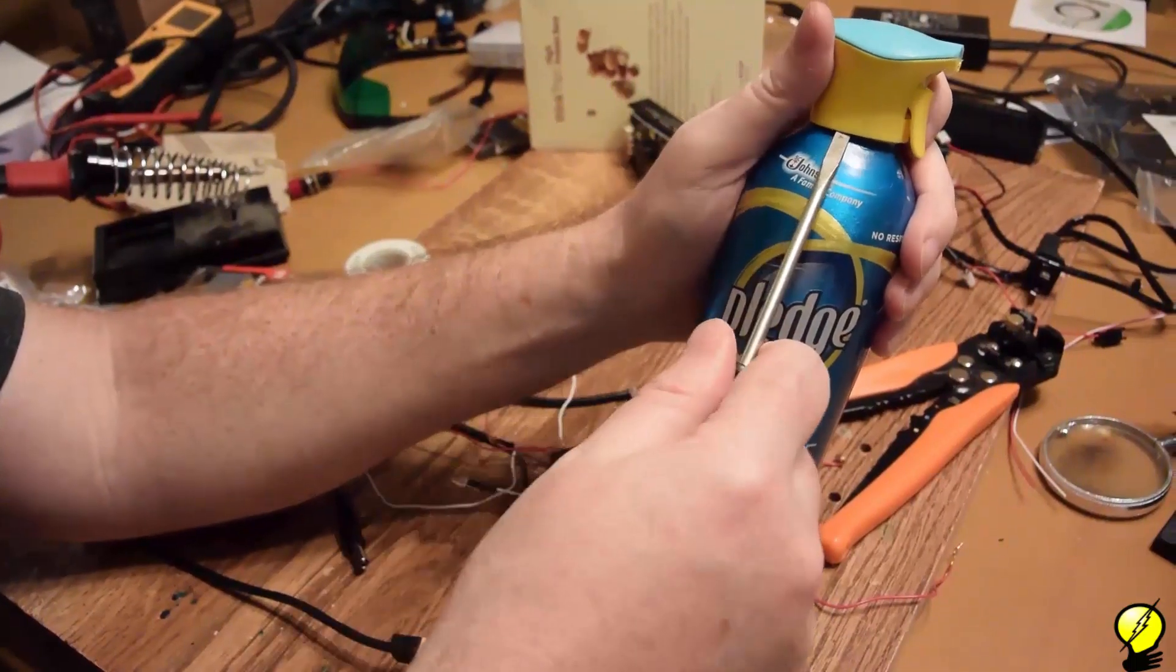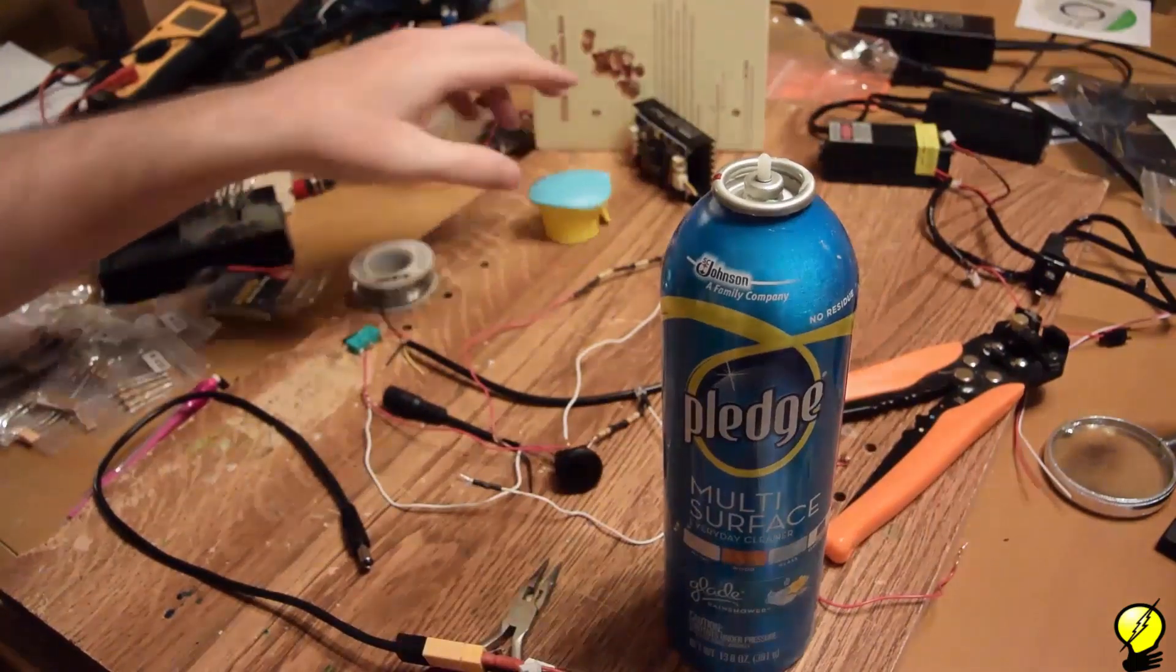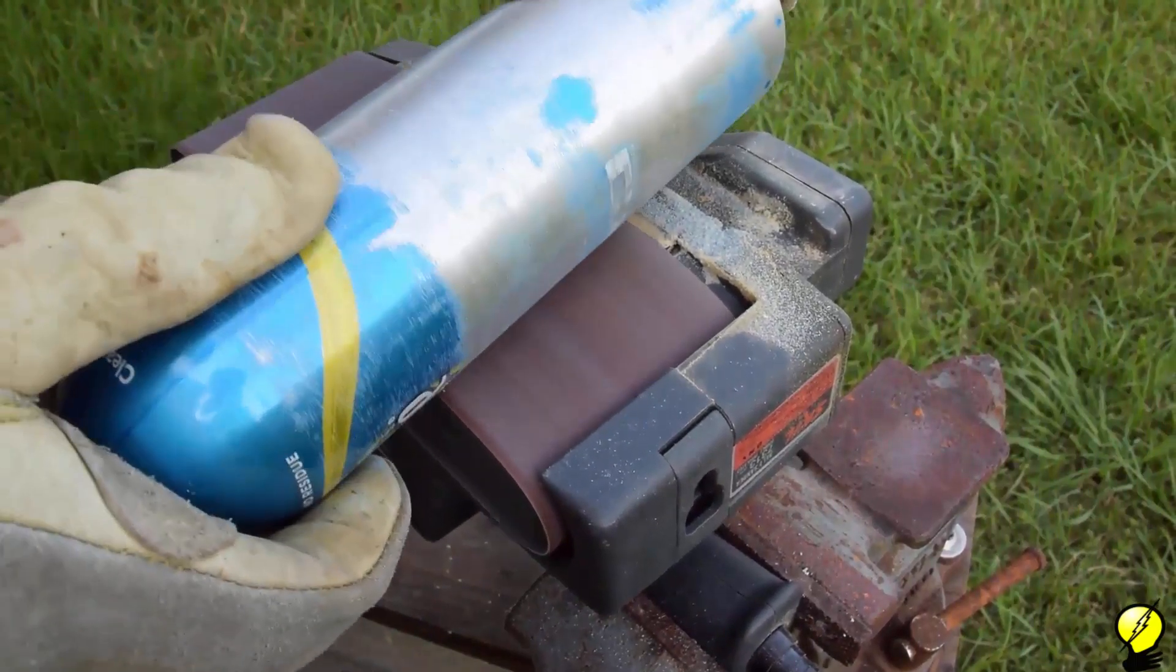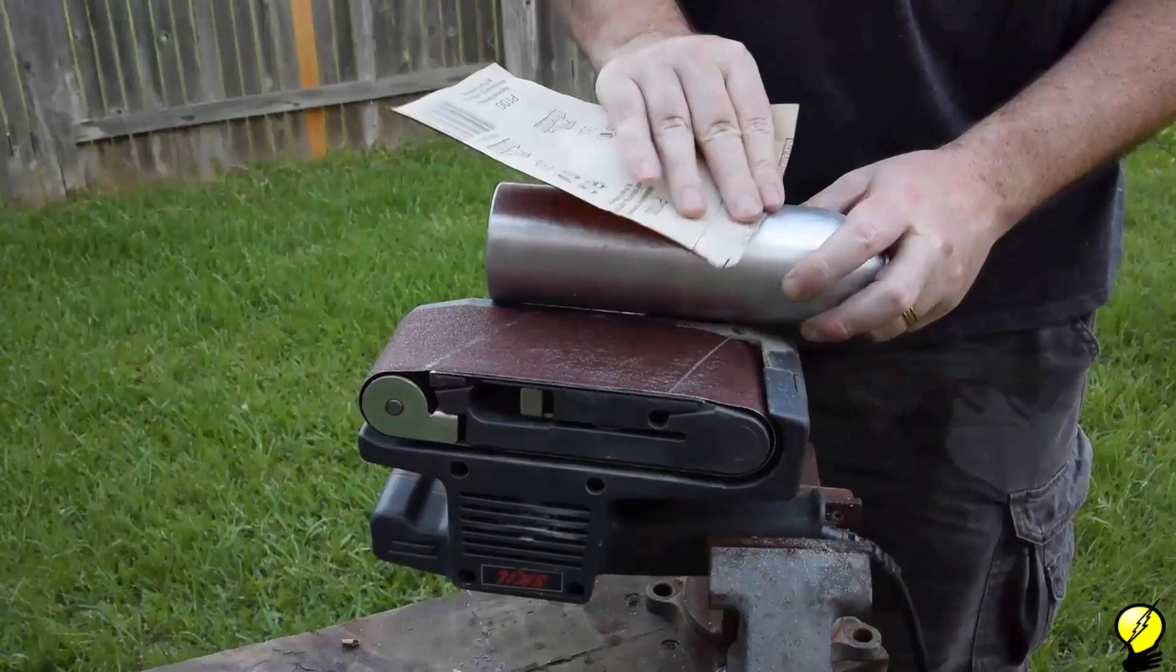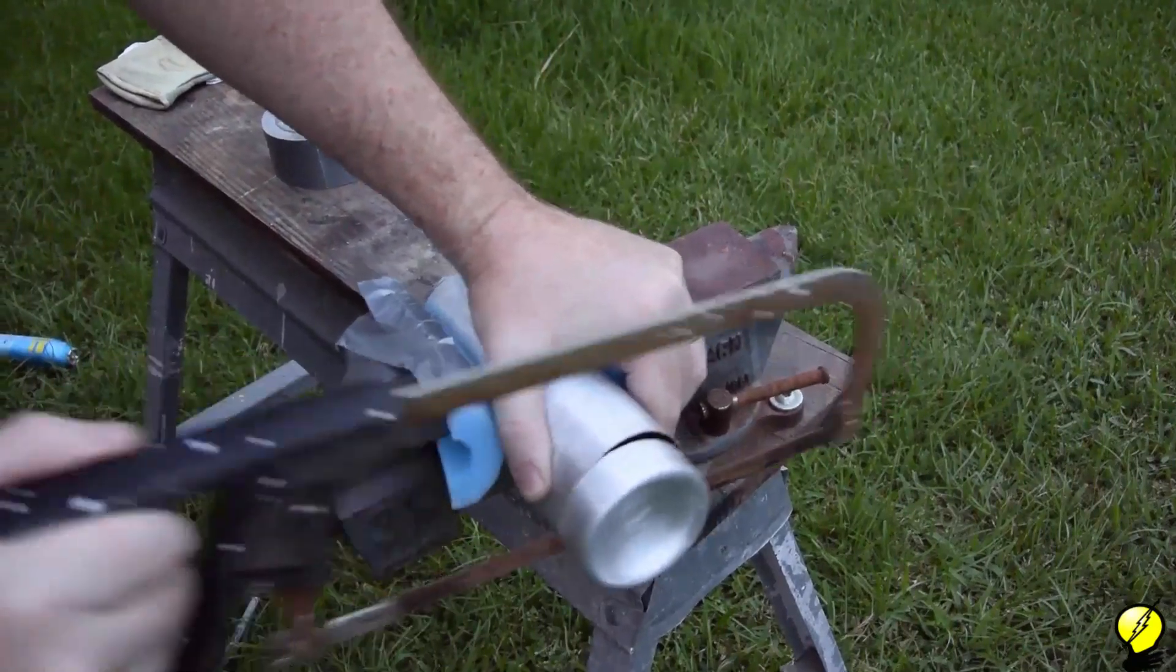To disassemble the can pop the top off using a small screwdriver. Then sand off the paint so that we'll have a nice shiny aluminum surface. Cut the back off of the can and use force to push out the nozzle.